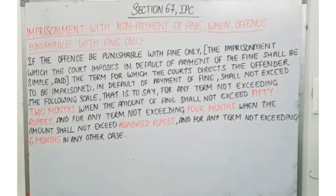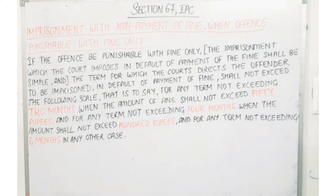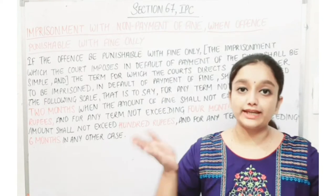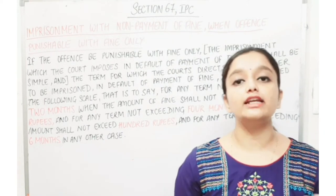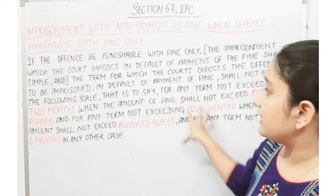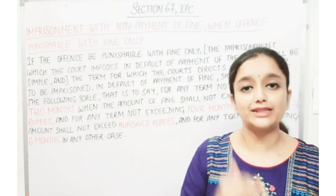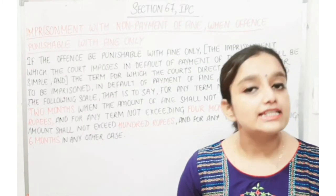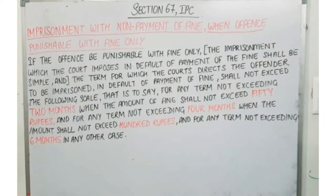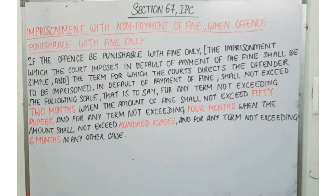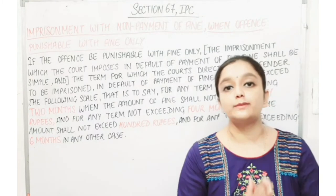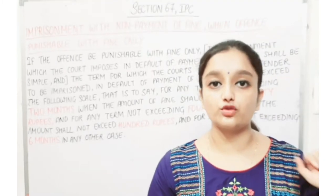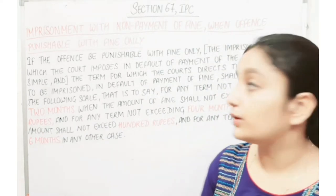The term for which the court directs the offender to be imprisoned in default of payment of fines shall not exceed the following scale: For any term not exceeding 2 months when the amount of fine shall not exceed 50 rupees. So if the fine has not been paid and the fine is up to 50 rupees, the imprisonment will be 2 months.